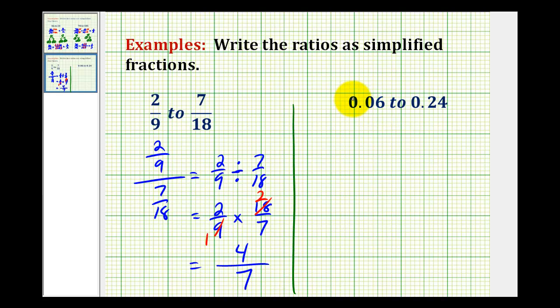For our second example, we have 0.06 to 0.24. We could approach this the same way that we approached the first example, and write this as 6 hundredths over 24 hundredths. But let's keep it in decimal form and see if we can eliminate the decimals another way. So we'd have 0.06 over 0.24.